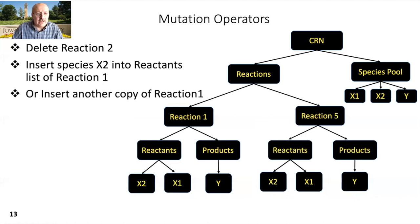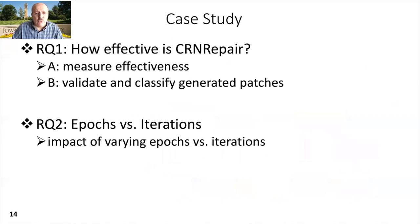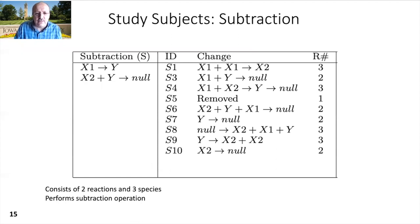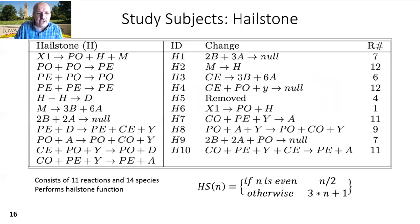Now let us talk about the case study. We asked two research questions to evaluate how well CRN repair works. RQ1 part A measures effectiveness by counting the number of patches obtained for a set of faults and the time to repair. Part B validates generated patches manually using an extended test set, and classifies the types of repairs seen. RQ2 studies the impact of varying epochs versus iterations on the repair. We took two study subjects from ChemTest: subtraction and hailstone CRNs. ChemTest has nine mutants for subtraction CRN, and the hailstone CRN consists of 11 reactions, 14 species, and 10 mutants.